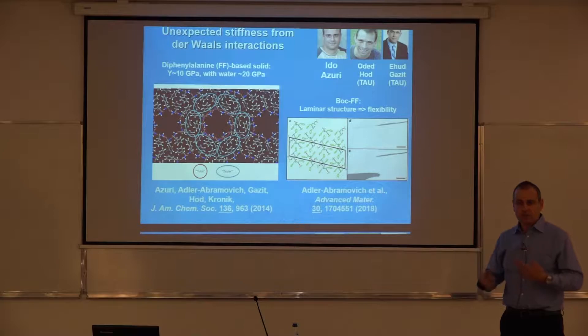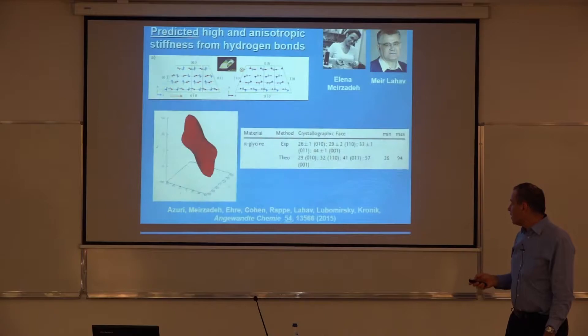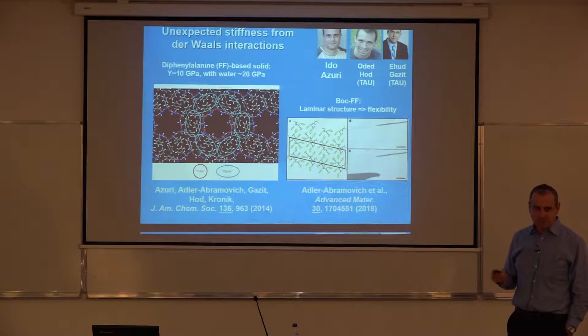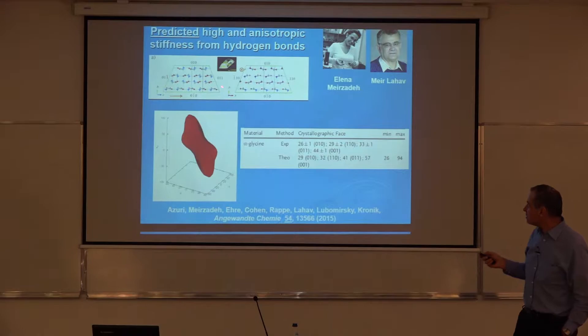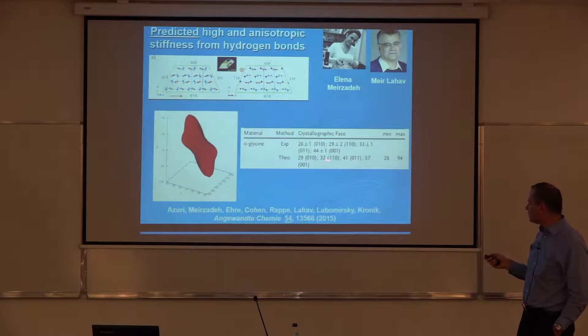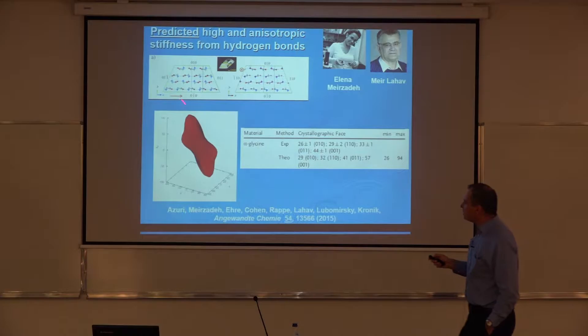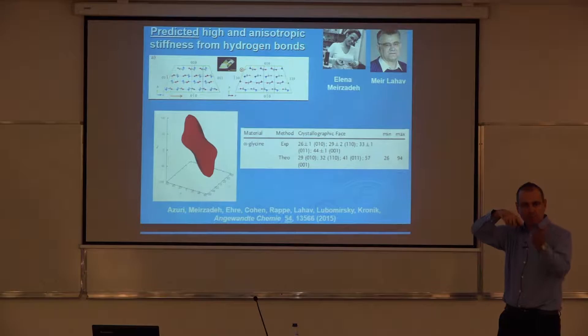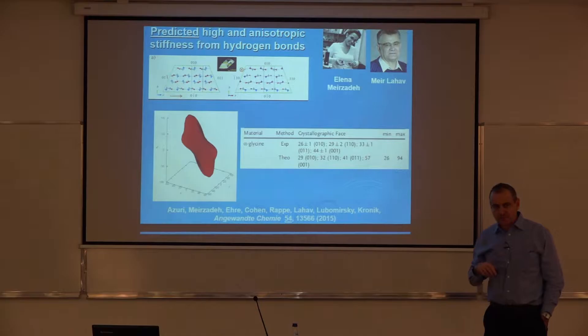More recently with the same group, we've shown that this can be stiff and yet, if it's thin enough, also quite flexible. This is a derivative known as Boc-FF, and one can really use it to sort of design mechanical properties. Then my student Ido Azuri said: if this is what you get for van der Waals interactions, what will you get with hydrogen bonding, which is in principle a little stronger? So we took the simplest amino acid solid — based on glycine — and Ido calculated the Young's modulus along different faces. He found two things: first, the values are really high, even higher than before, as high as many tens of gigapascals; and second, that it's very anisotropic — the Young's modulus as a function of direction is all over the place, depending on the relative orientation between where you press from and where the hydrogen-bonded network is.